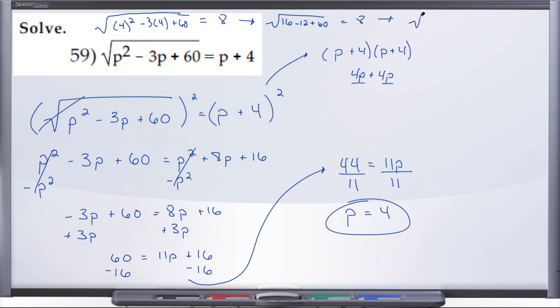16 minus 12 gives us 4, plus 60 is 64 equals 8. What is radical 64? Radical 64 is 8 equals 8. Here again, we get a true statement, so we know our solution p equals 4 is correct.